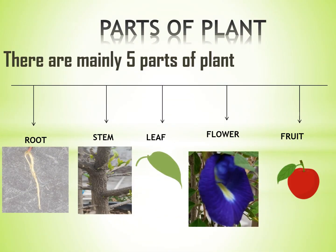Parts of Plant. There are mainly five parts of a plant: Root, Stem, Leaf, Flower, and Fruit.